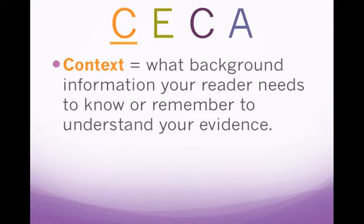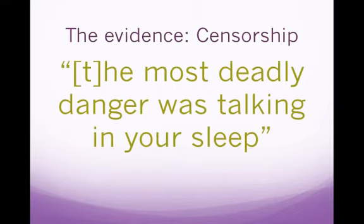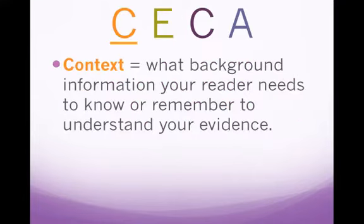We start with context. Think about what background information your reader needs to know or remember to understand your evidence. If this is my evidence, what does somebody need to know? This kind of comes out of nowhere, so we'd need to know it's about Winston and about Oceania. We'd need to know that the Thought Police come to get you, that people have to worry about what they're saying not only when they're awake, but also when they're sleeping. All of those things might be important background information to help us understand the quote. That's your context — background information that the reader needs.